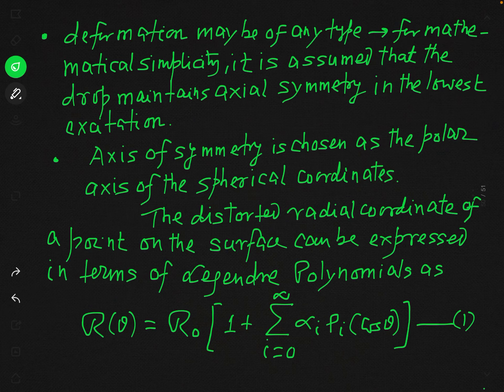The deformation produced in the nucleus may be of any type, but for mathematical simplicity we assume that in the lowest excitation the nucleus maintains its axial symmetry. We choose the axis of symmetry as the polar axis in spherical polar coordinates. The distorted radial coordinates of a point on the surface of the liquid drop can be expressed in terms of Legendre polynomials.